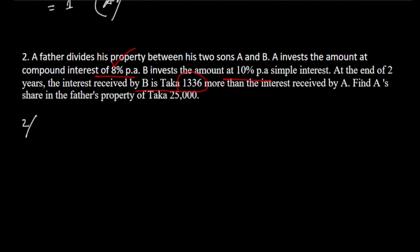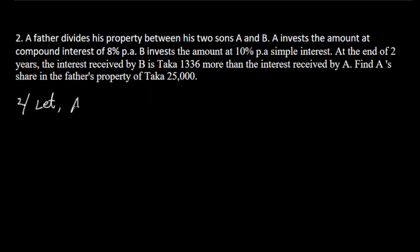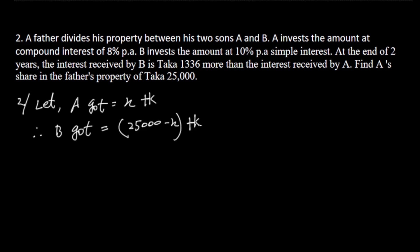More than the interest received by A. Find A's share in the father's property of Taka 25,000. Let A got X taka, and B got 25,000 minus X taka. According to the question, A got interest equal to X taka, invested at compound interest.